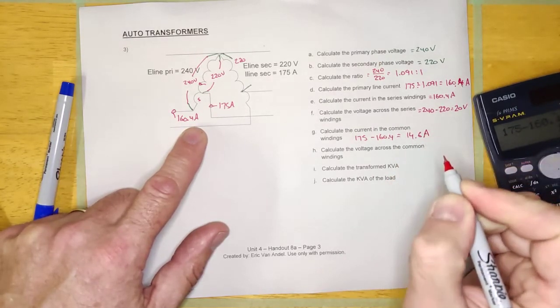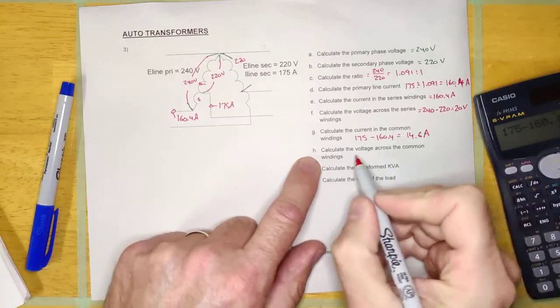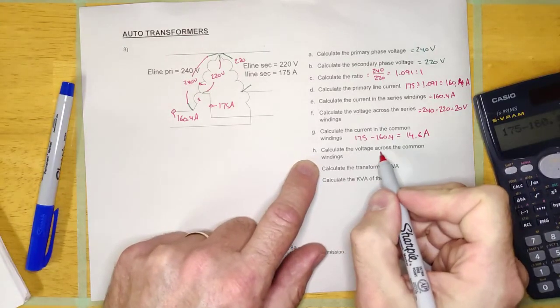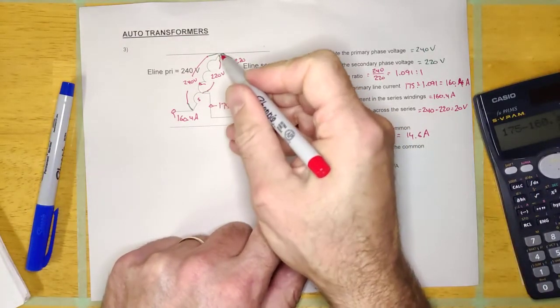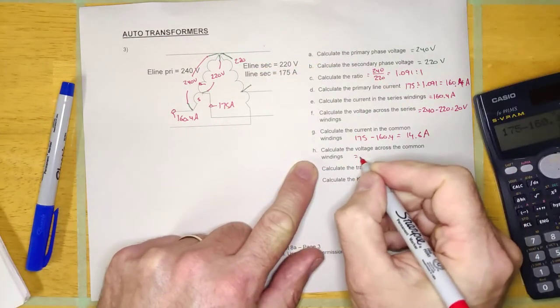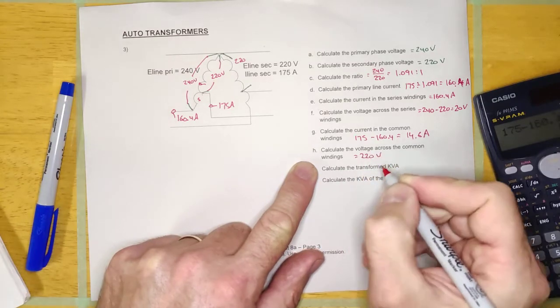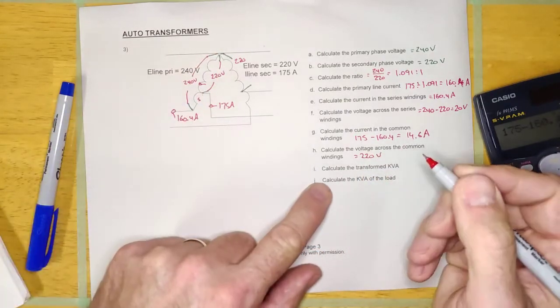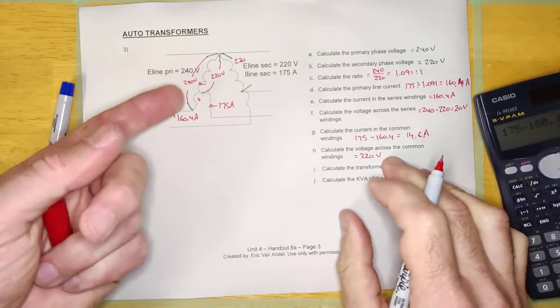Calculate the voltage across the common winding. Well, here's the common winding. What do you guys think it is? 220 volts. It really helps to draw it in there like that. So we've calculated everything about this.